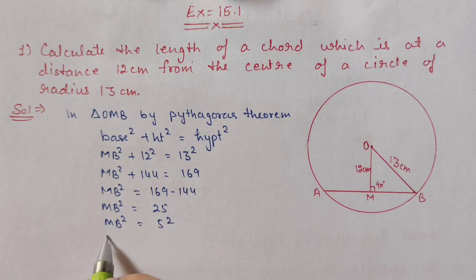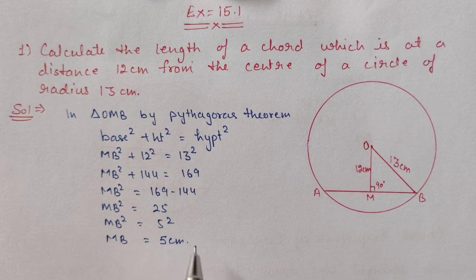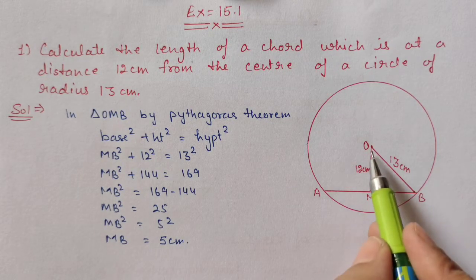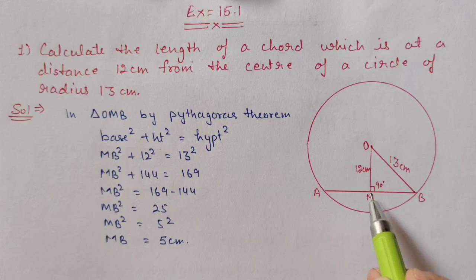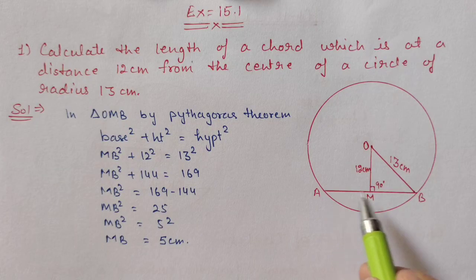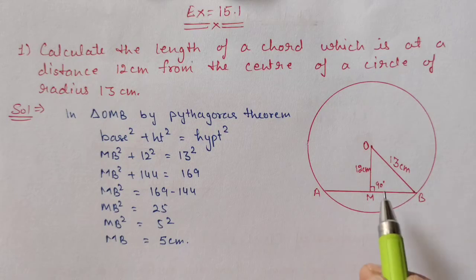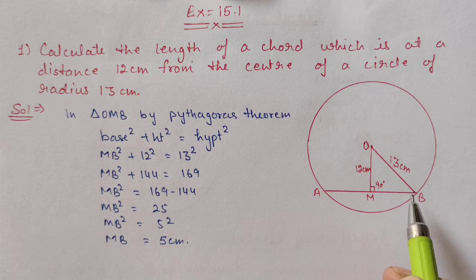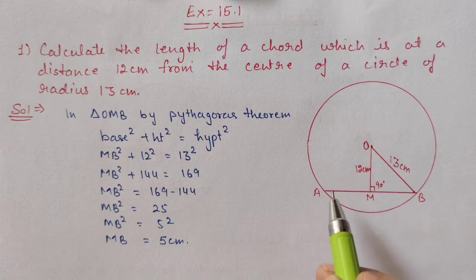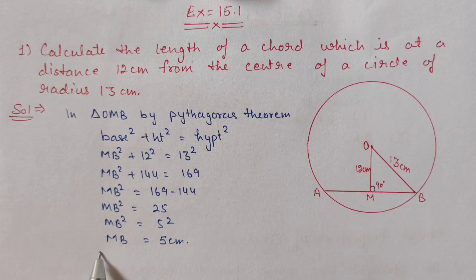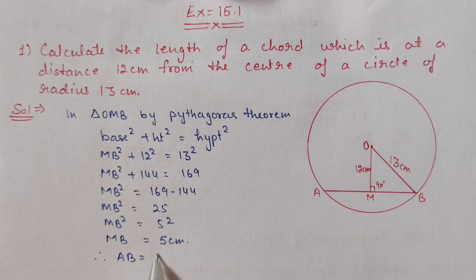So MB = 5 cm. Since the perpendicular from the center bisects the chord into two equal halves, the other half is also 5 cm. Therefore AB = 5 + 5 = 10 cm.